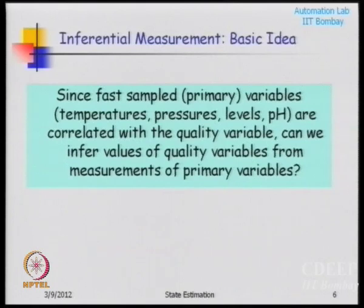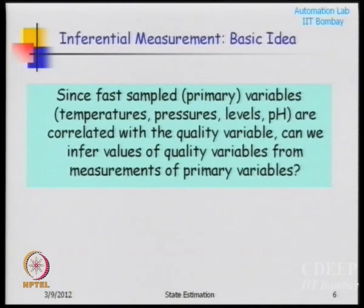I want to separate measurements into primary measurements - done at a fast rate - and secondary measurements - done intermittently. For example in an ICU, pulse rate and BP can be monitored continuously as primary measurements, but blood glucose may only be sampled periodically as secondary measurements.